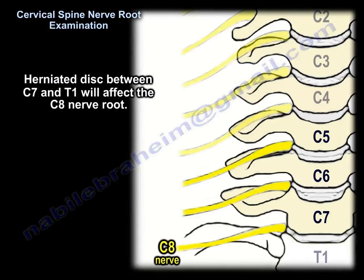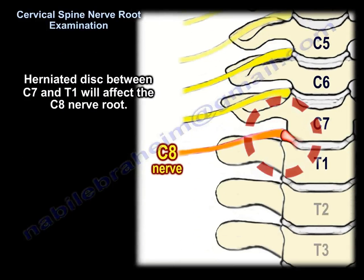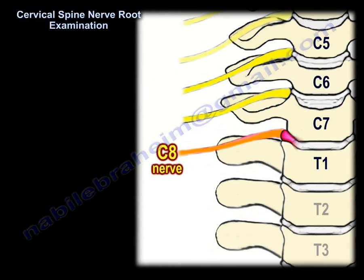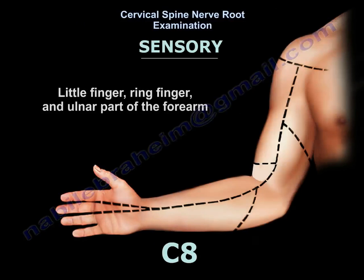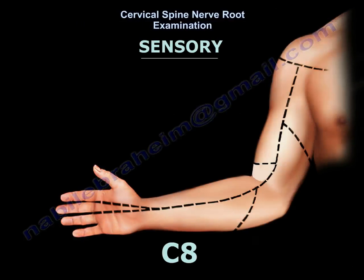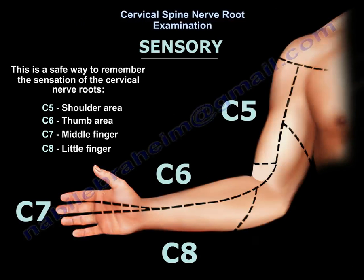A herniated disc between C7 and T1 will affect the C8 nerve root. The motor function of C8 is finger flexion via the flexor digitorum superficialis and profundus. The sensory distribution of C8 covers the little finger, the ring finger, and the inner part of the forearm. A helpful way to remember cervical nerve root sensation: C5 is around the shoulder, C6 is the thumb, C7 is the middle finger, and C8 is the little finger.